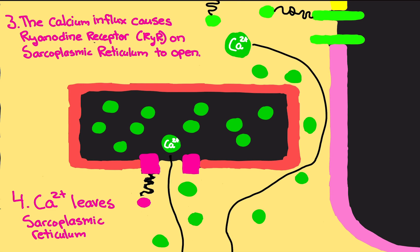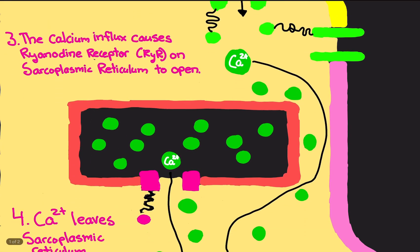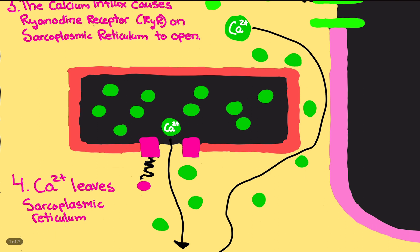Ryanodine receptors block the container. It's like the lid of a container—that's what ryanodine receptors are, it's just the lid. So calcium cannot leave the sarcoplasmic reticulum. The lid is shut. But when calcium rushes in from the action potential, it causes ryanodine receptors to open.